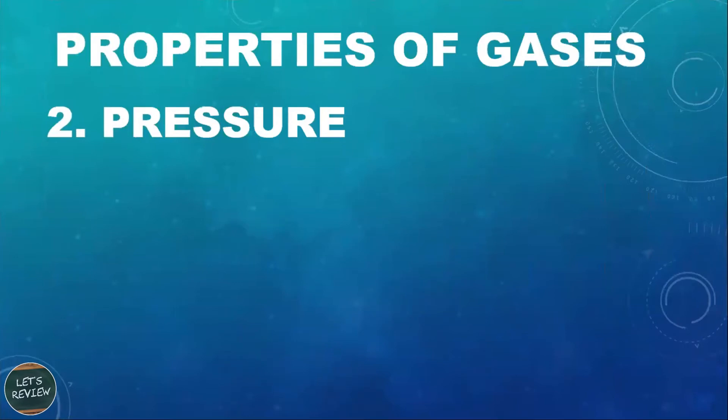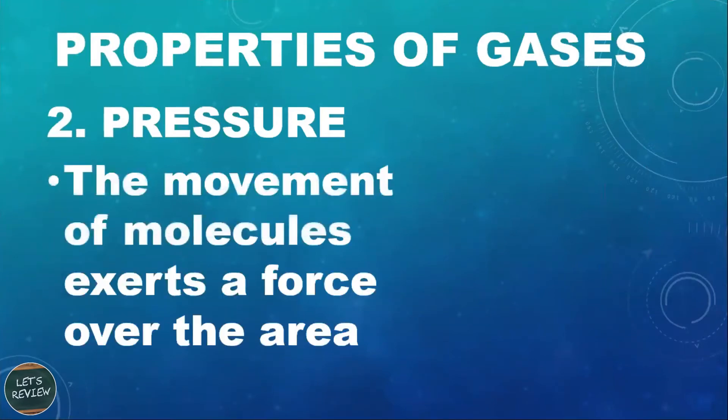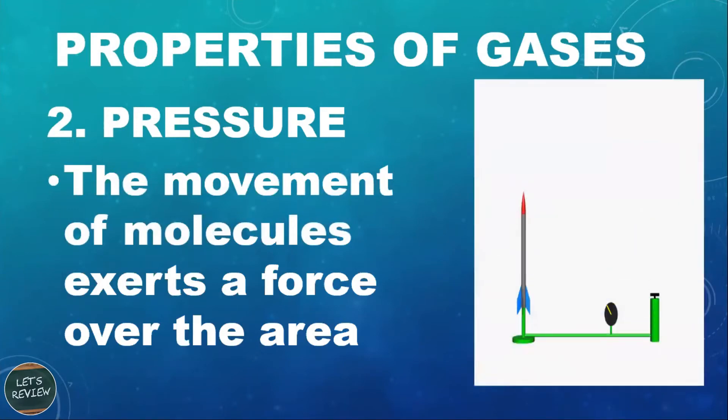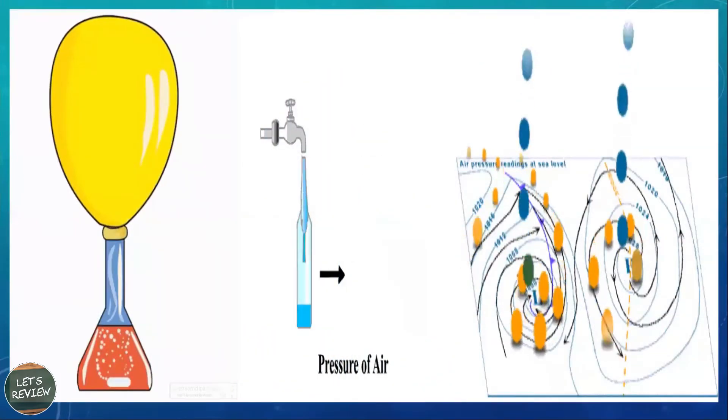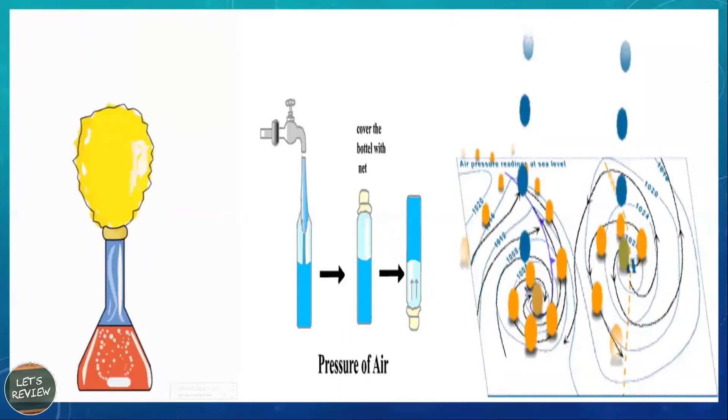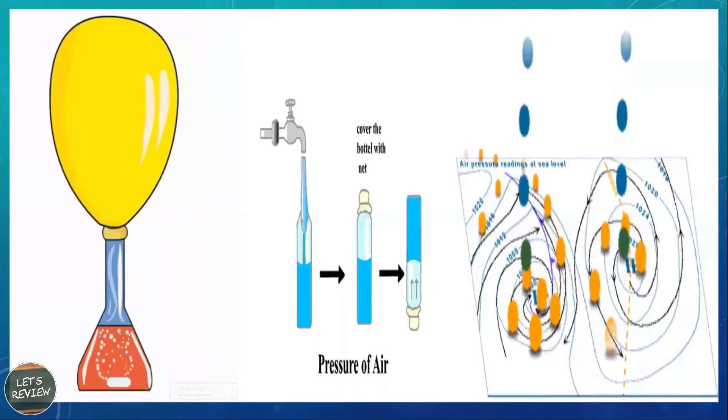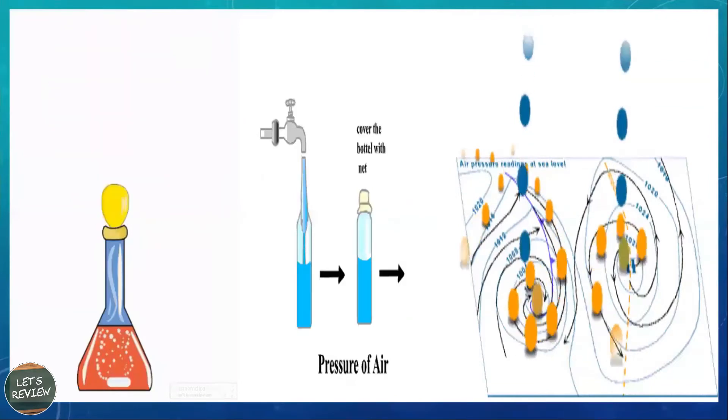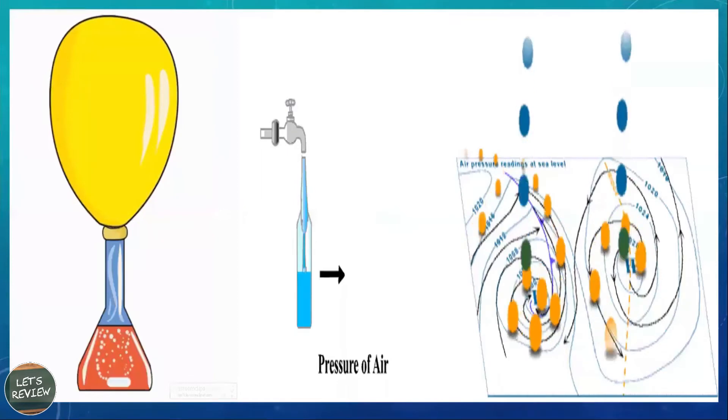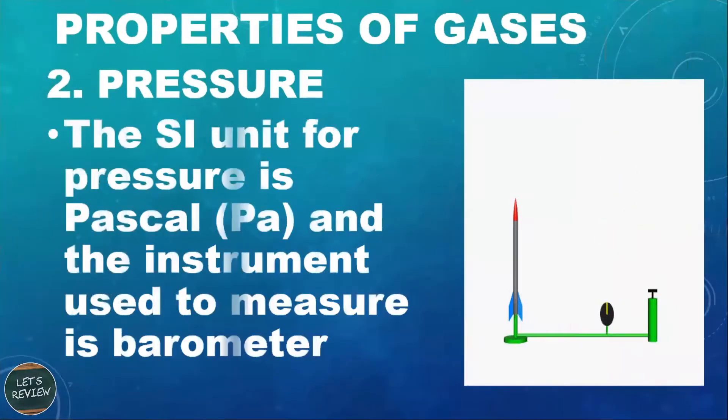Second property of gas is its pressure. The movement of molecules exerts a force over the area, like this showing you the pressure present in air. Even in the kind of weather that we are experiencing, there's something to do with air pressure. The SI unit for pressure is called Pascal, and the instrument used to measure is the barometer.